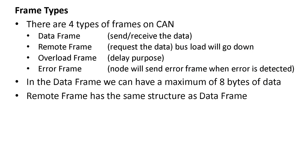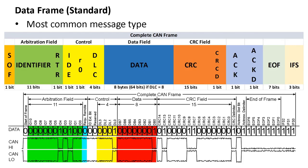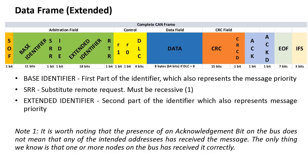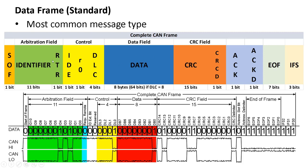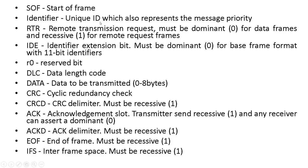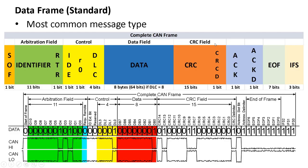There are four types of frames in CAN: the data frame, remote frame, overload frame, and error frame. Let's take them one by one. The data frame can be of type standard or extended. In the standard data frame, we have one bit to indicate the start of frame — this bit is always zero. Then we have the identifier, which is a unique ID that also represents the message priority, so bus arbitration is made based on this identifier.